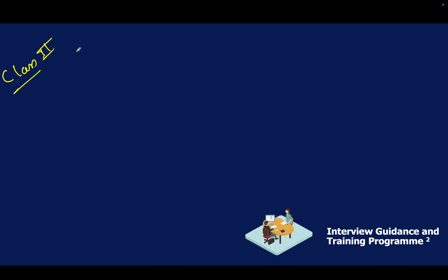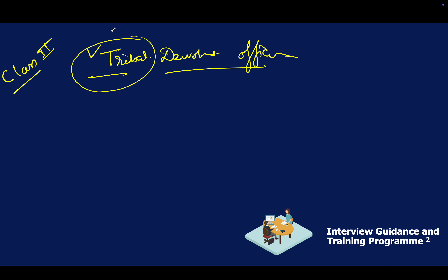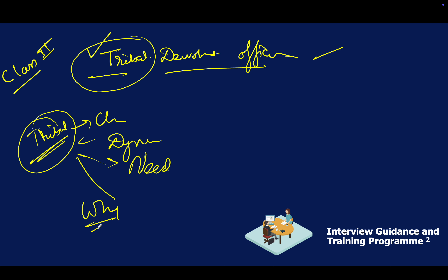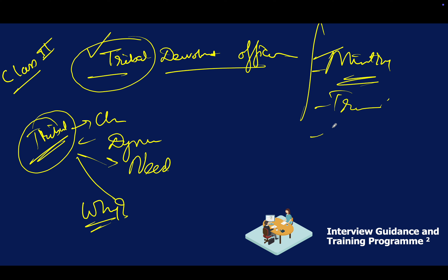Let's understand the basic requirement. In class 2, there is a post which we have to understand through example — but this is applicable for any post. So in class 2, there is a post: Tribal Development Officer. The person is responsible for developing the tribal areas and working for the welfare of the tribes. There are also characteristics in the tribal area that you need to understand.